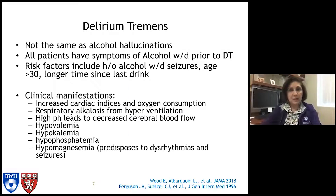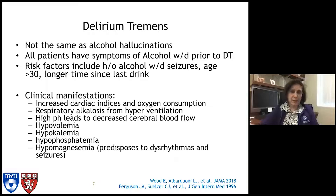Delirium tremens is not the same as alcohol hallucinations. All patients have symptoms of alcohol withdrawal prior to developing DTs. Risk factors include a history of alcohol use, prior withdrawal seizures, age greater than 30, and a longer time since the last drink. Clinical manifestations include hypertension, tachycardia, and increased oxygen consumption. The patient hyperventilates, causing respiratory alkalosis with a high blood pH, leading to decreased cerebral blood flow. Patients are typically hypovolemic with low potassium, low phosphate, and low magnesium — and that low magnesium can predispose to dysrhythmias and seizures.